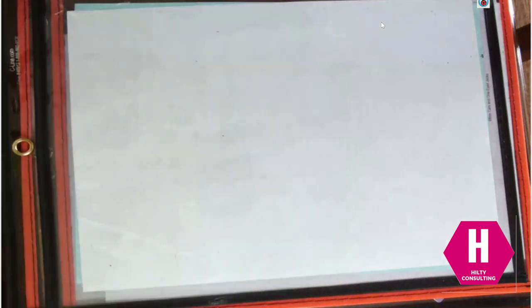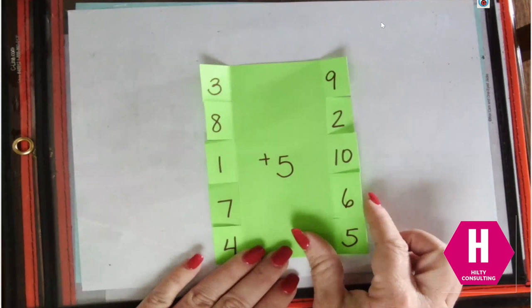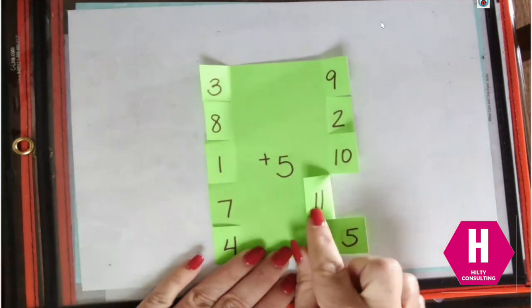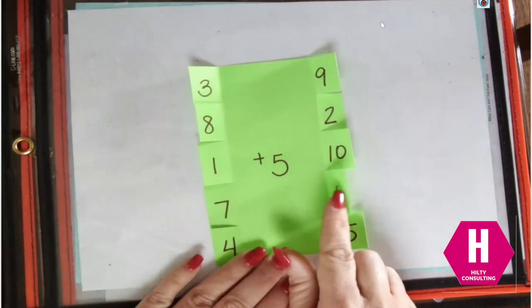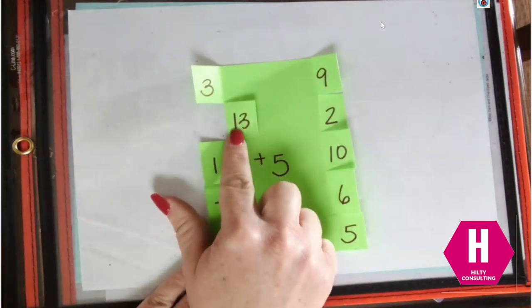This works for multiplication division. It also works for addition subtraction. If I want to add 5, if I want to do 6 plus 5, I fold this tab in and I can see 11. If I want to do 8 plus 5, I fold this tab in and I see 13.